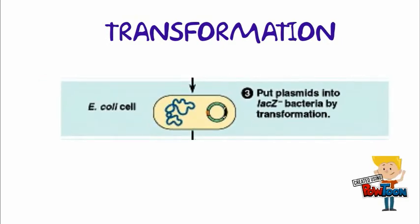In transformation, we put the plasmid into E. coli bacteria. We use bacteria because bacterial cells replicate quickly and create hundreds of copies, while some human cells might take hours or even days to divide.